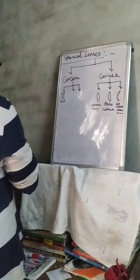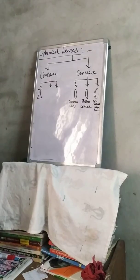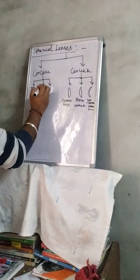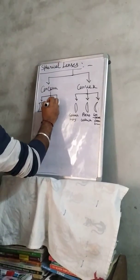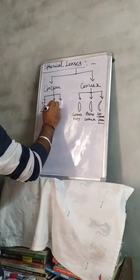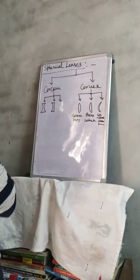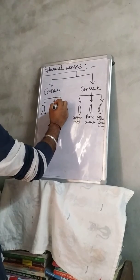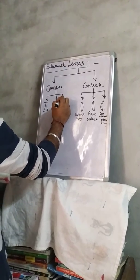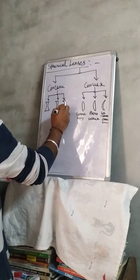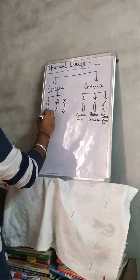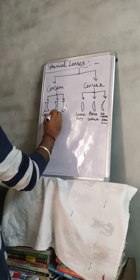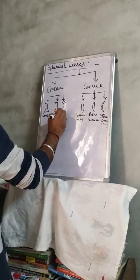Same with the concave lens we are having. This is concave lens. One we have is the planoconcave. This is planoconcave.